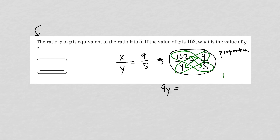Let's just do the math on the side. You have a calculator, but I'll show you my work here. 5 times 2 is 10. 5 times 6 is 30, plus 1 is 31. 5 times 1 is 5, plus 3 is 8, so 810. 9y is equal to 810.